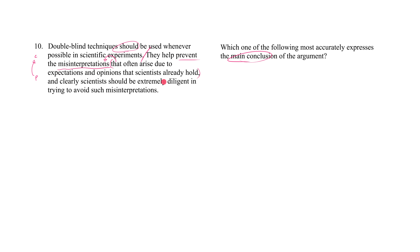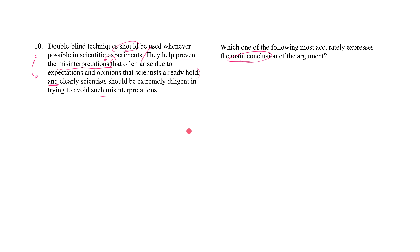So far, it seems like it is bearing out our hypothesis. We're saying double-blind techniques should be used whenever possible. Why? Because they prevent mistakes, and clearly scientists should avoid those mistakes and be extremely diligent in avoiding them. Now the hypothesis is borne out, and I'm very confident that this is the conclusion. We're going to do a couple of things here that are, strictly speaking, not necessary to get the point on this question — but we're not just trying to get the point. This point doesn't count. We're using these questions as cannon fodder to figure out the theory that explains future questions.